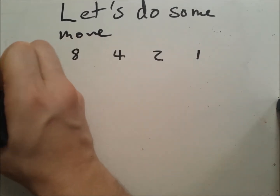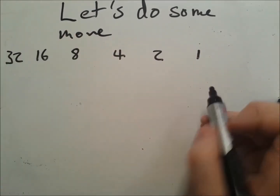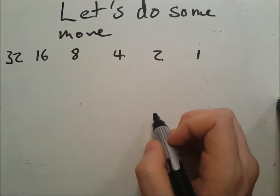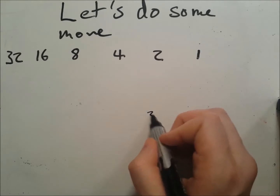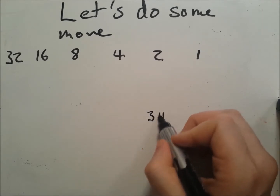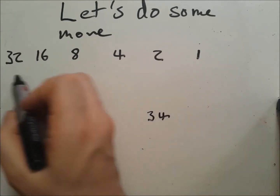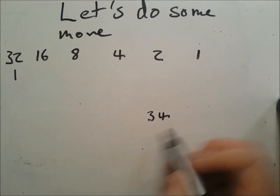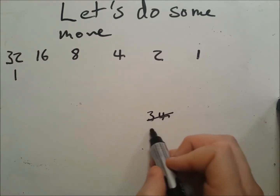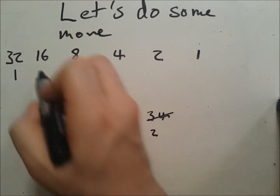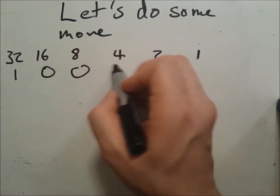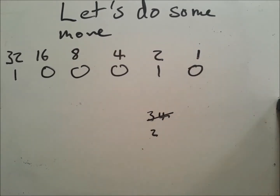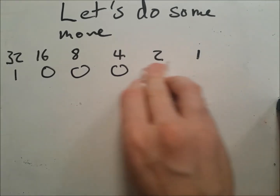Let's convert the number 34 into binary. Can you fit 32 in? Yes. So we put in a 1. We get left with 2. We know where the 2 goes. And there we are — there's 34 in binary.